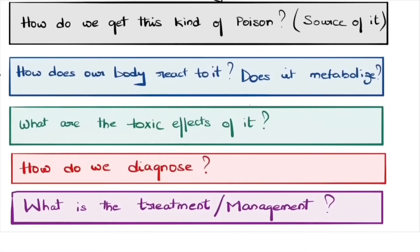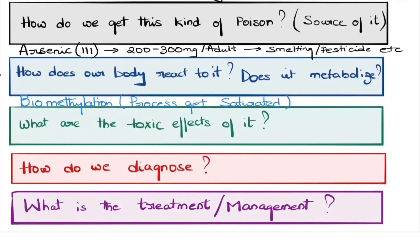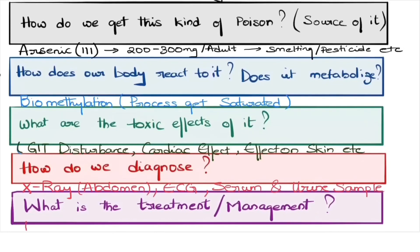I hope after seeing this complete video your doubts regarding the questions are cleared. Like how do we get this kind of poisoning, what is the source? We have studied the various sources like smelting, pesticides, etc. And trivalent arsenic is highly toxic, and the lethal dose is 200 to 300 mg in adults and 2 mg per kg body weight in children. It is metabolized in our body by biomethylation process, and this process gets saturated. It has various effects on GI tract, cardiovascular system, skin, etc. And regarding diagnosis, it is diagnosed by x-ray, ECG, serum and urine samples. The treatment is done by dimercaprol at a dose of 3 to 5 mg per kg body weight.